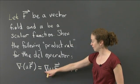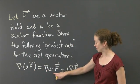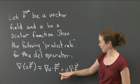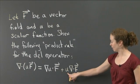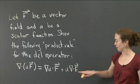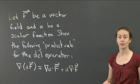is actually equal to the gradient of u dotted with F, plus u times del dot F, where F, again, is the vector field.